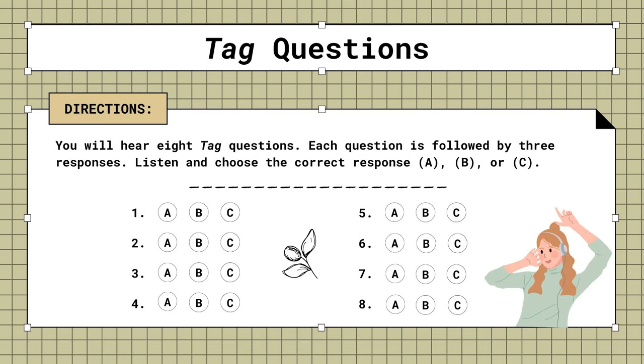Mini-test. Tag questions. You will hear eight tag questions. Each question is followed by three responses. Listen and choose the correct response. A, B, or C.